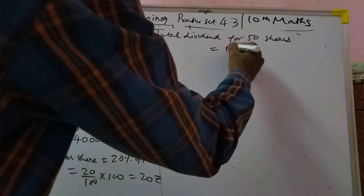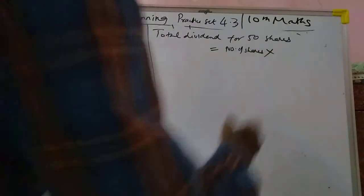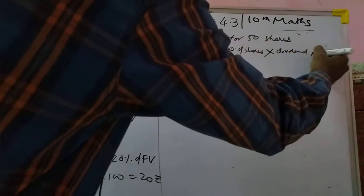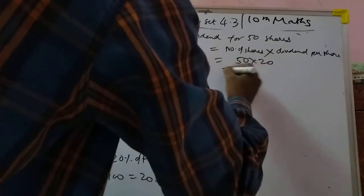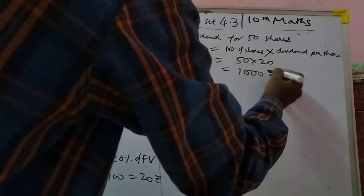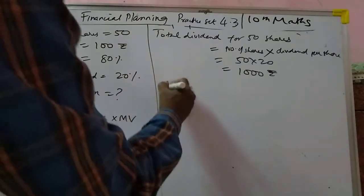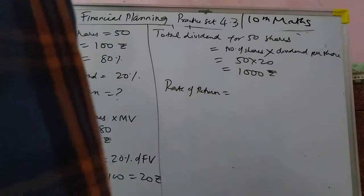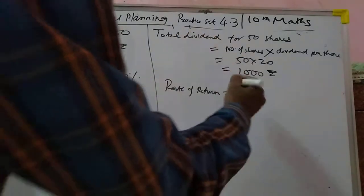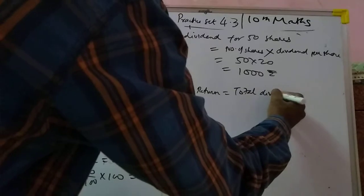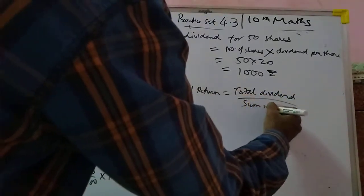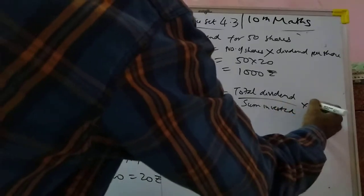Total dividend equals number of shares into dividend per share, that is 50 into 20, which becomes 1000 rupees. Now simply apply the formula: rate of return equals total dividend upon sum invested into 100.